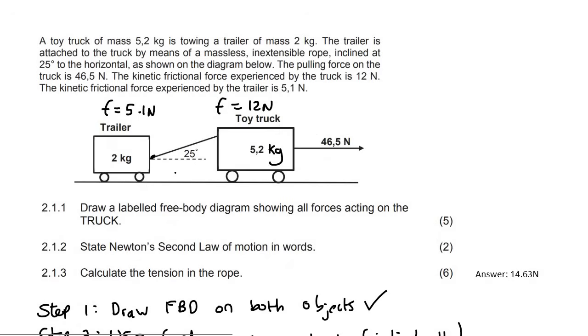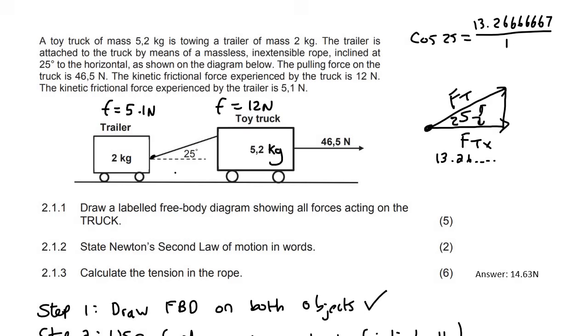So if, for example, we look at the trailer, we know that it's got a tension force, we can see over there. Now, we've just calculated FTX. We know what FTX is, so we can make a little triangle. And we know that this is 25. But we need to calculate FT. Sorry, let me just write this over here. Because FT is actually going in that direction. And so we've calculated this FTX as 13.26, and it's that whole long number. So we just use trigonometry now. So we can say, this is the adjacent, this is the hypotenuse. So we can say cos 25 is the adjacent, which is 13.26 over FT.